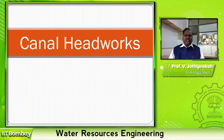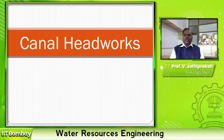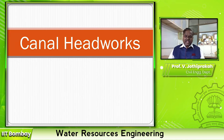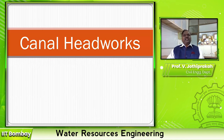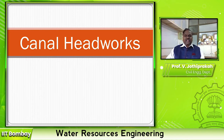In our first class we said that dams are water storage structures constructed to reduce the water availability problem. If you store water when it is available in excess, then water is available at that location throughout the planning period. But there may be other locations where it is not possible to construct dams and reservoirs. To reduce that spatial water availability problem, you construct a network of canals and transport water from reservoir to the field. That engineering is called canal irrigation engineering, or irrigation canal design engineering.